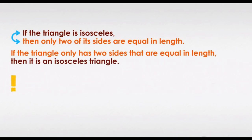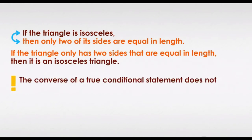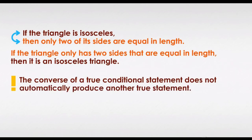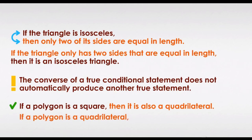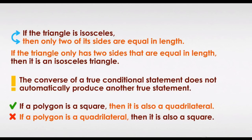The converse of a true conditional statement does not automatically produce another true statement. It might create a true statement or it could create nonsense. If a polygon is a square, then it is also a quadrilateral — that statement is true, but the converse of that is nonsense: if a polygon is a quadrilateral, then it is also a square. We know this is untrue because plenty of quadrilaterals exist that are not squares.